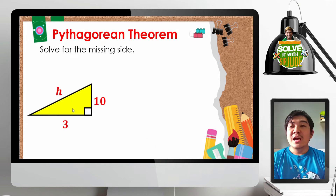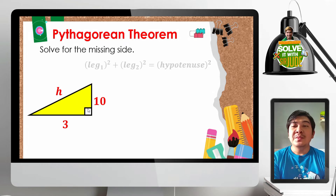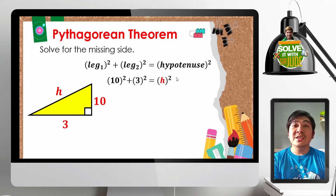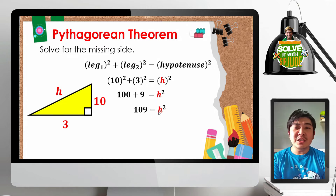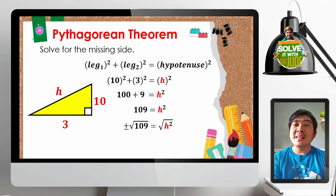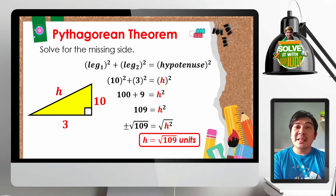For example number 3, we are asked to find the length of the hypotenuse. The side opposite the right angle is h. Using the Pythagorean theorem, substituting gives 10 squared plus 3 squared equals h squared — that is 100 plus 9 equals h squared, so 109 equals h squared. Extracting the square roots of both sides, h equals the positive square root of 109 units. The square root of 109 is already in its simplest form.